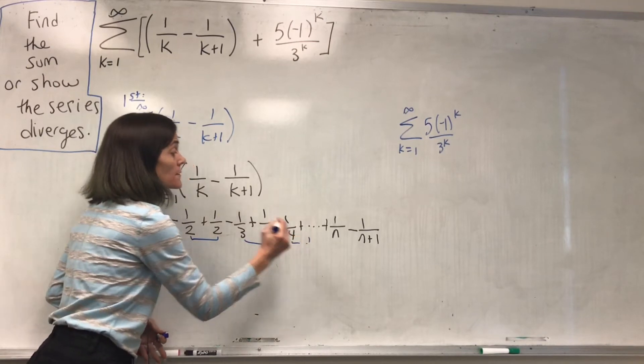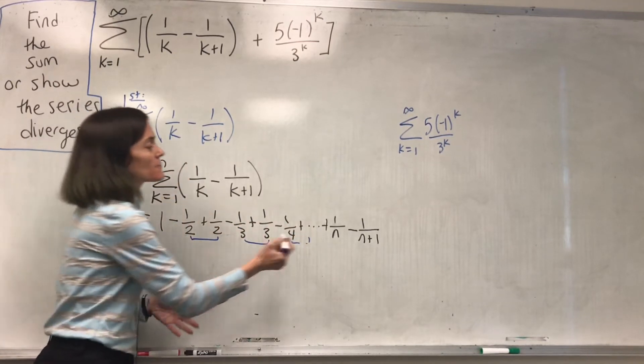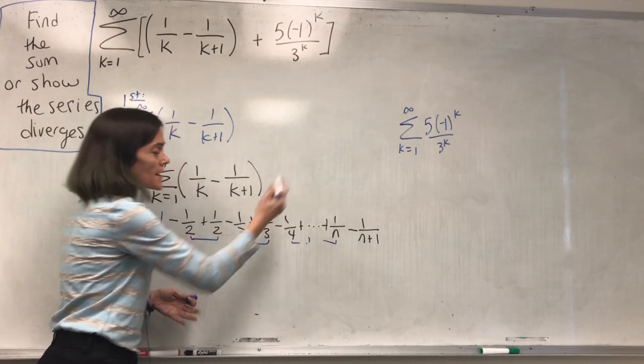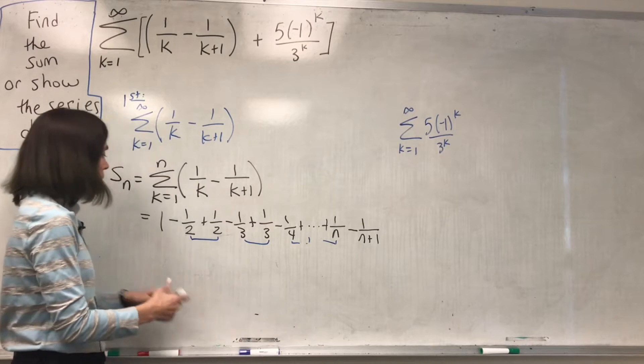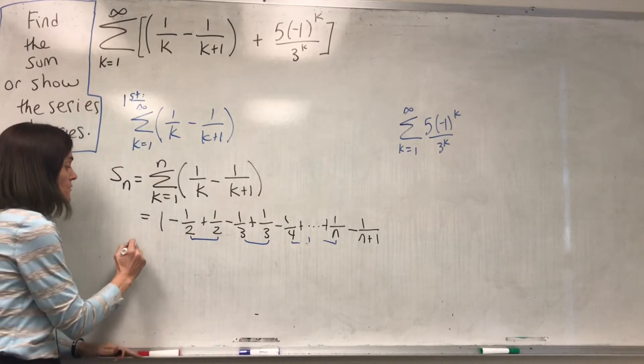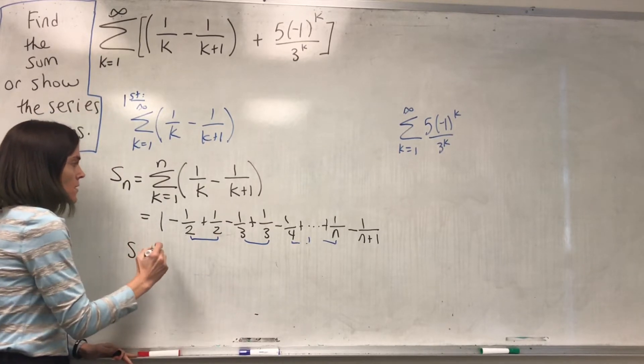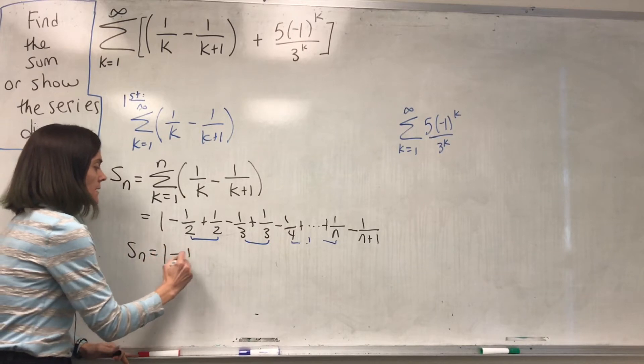The minus 1 fourth with part of the next term adds to zero, all the way out to this 1 over n with something from the previous term adds to zero. And so, we get this closed form for Sn as follows.